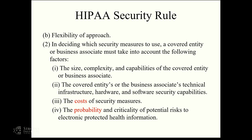In this context, reasonable security is fleshed out in the regulatory rule, which says that when you're determining whether something is reasonable, you need to consider various factors: the size, complexity, and capabilities of the covered entity; their technical infrastructure; the costs of the security measures; and the probability and criticality of the potential risks to the information. Some of these are relatively straightforwardly quantifiable — things like costs, and indeed something like probability is potentially quite quantifiable. On the other hand, criticality is not so easily quantifiable.